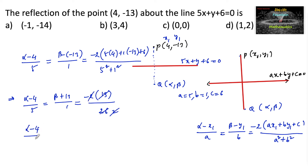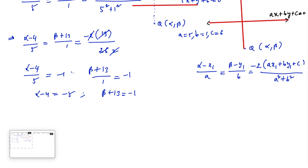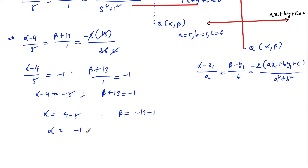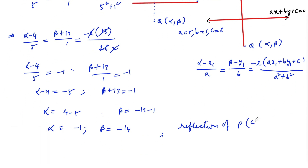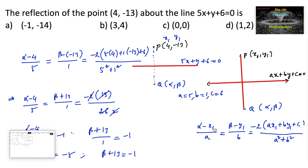So α - 4 = 5 × (-1) = -5, giving α = -1. And β + 13 = 1 × (-1) = -1, giving β = -14. Therefore, the reflection of the point (4, -13) under the line 5x + y + 6 = 0 is (-1, -14). So option A is the answer.